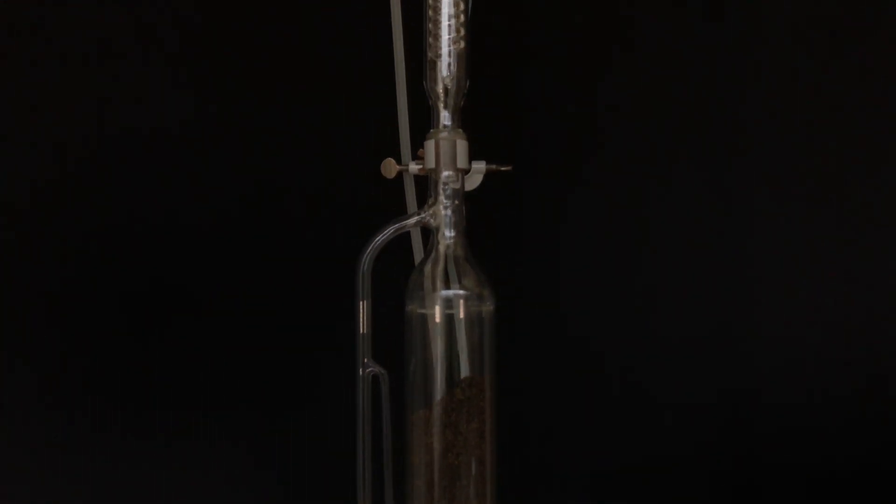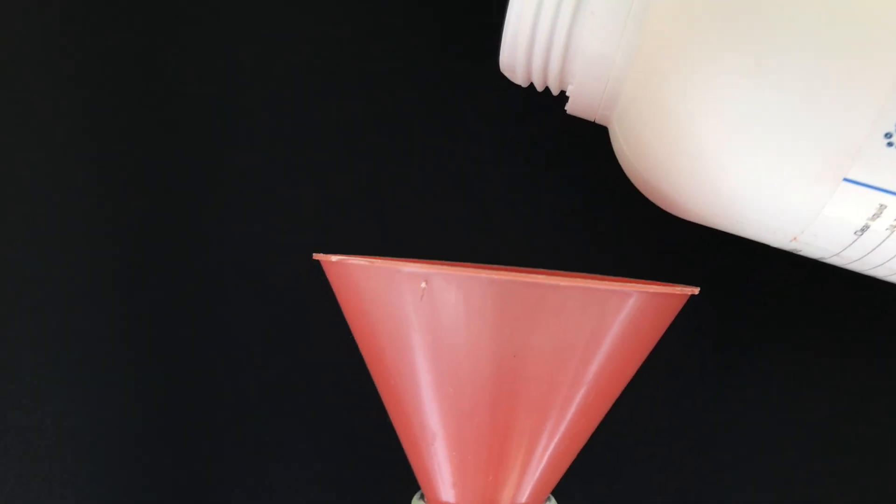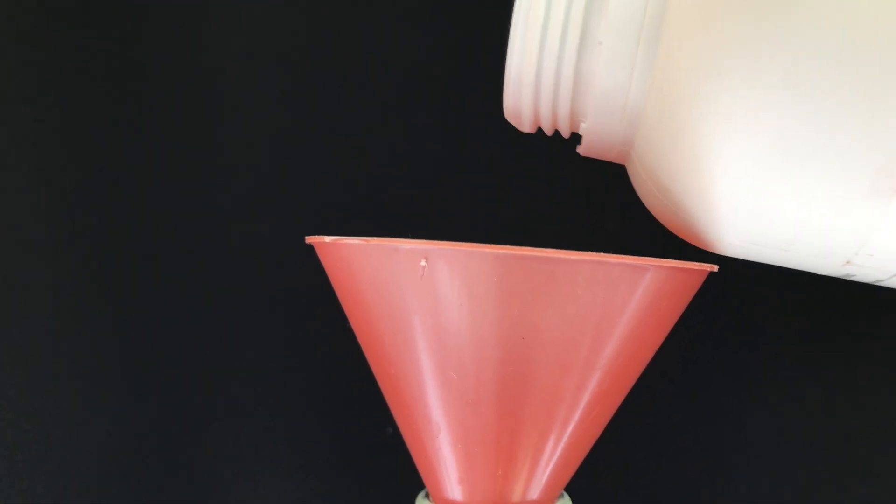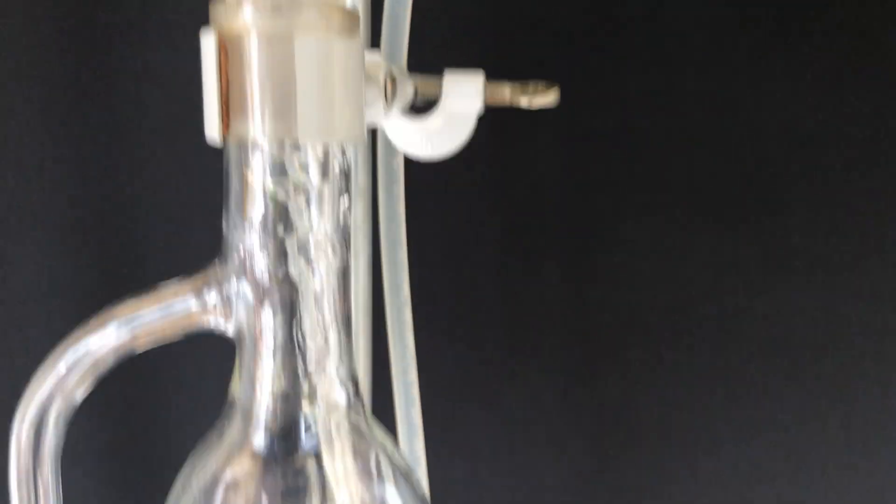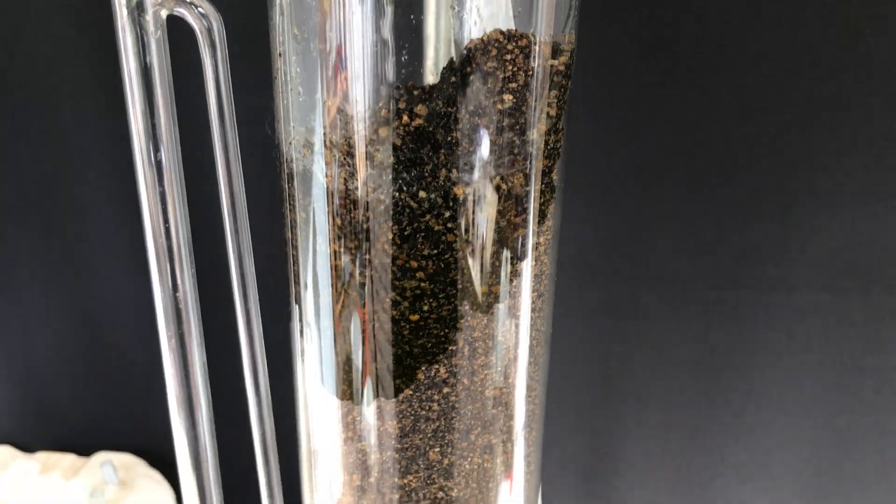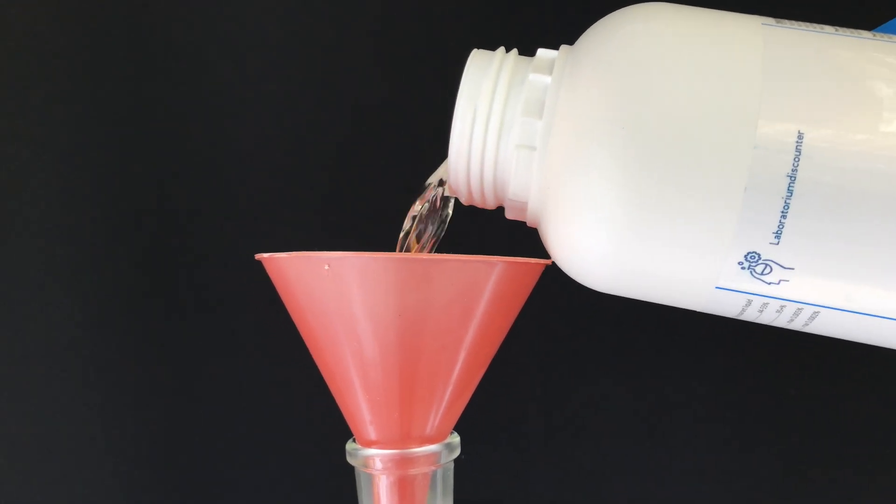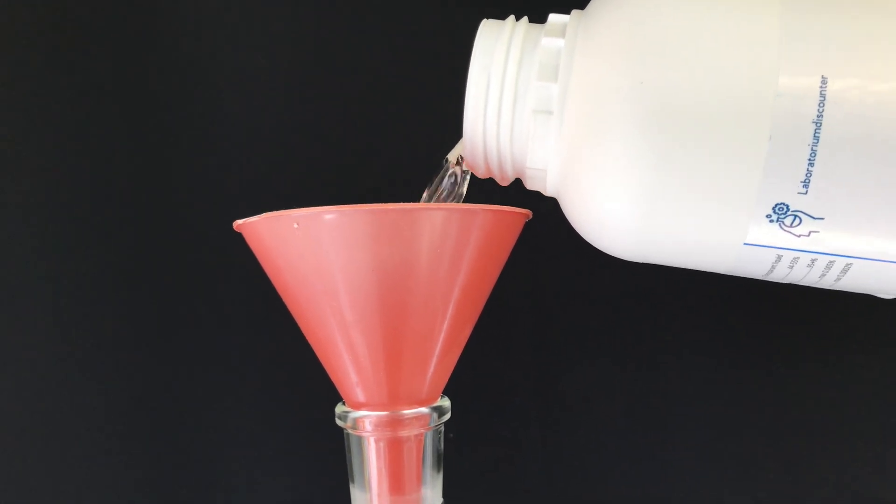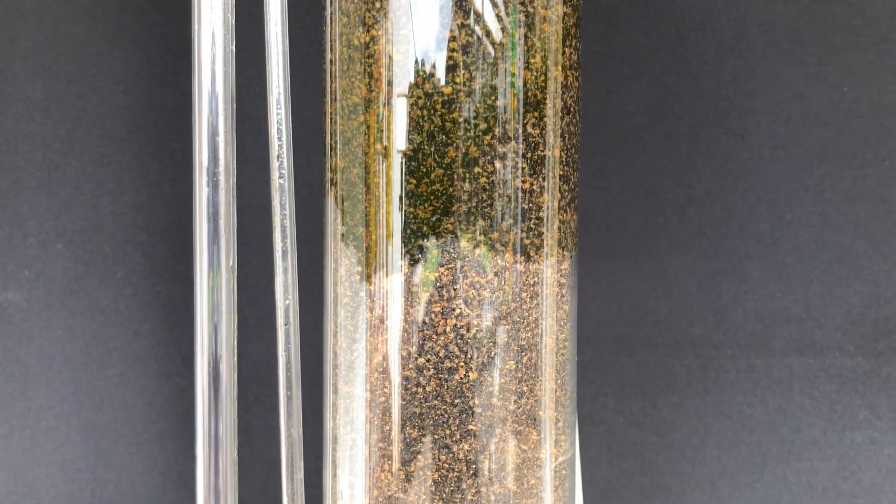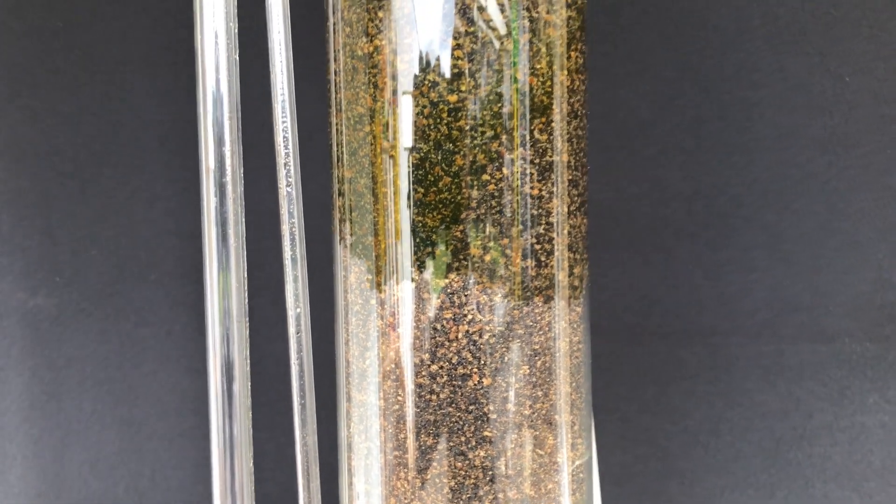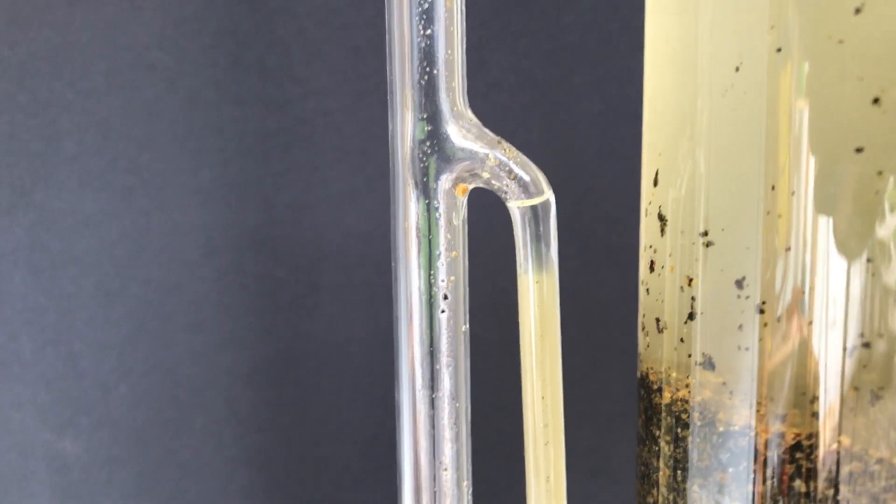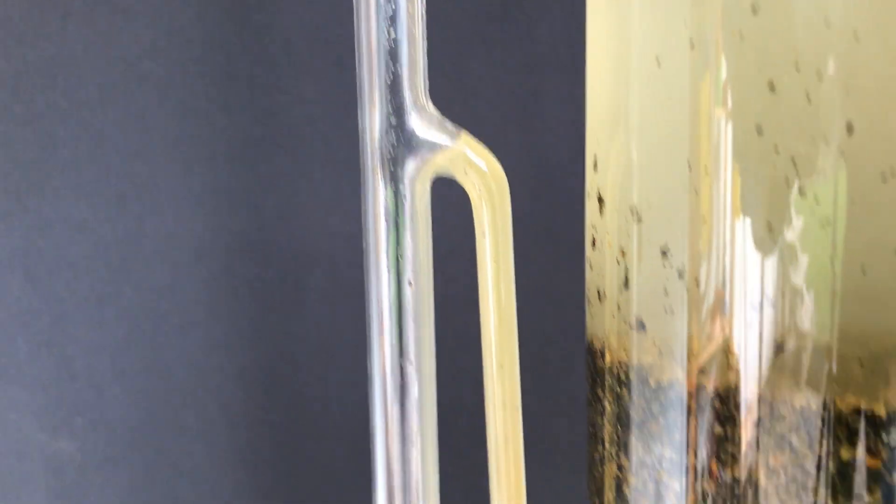As tropane alkaloids might be present in the form of a salt, you need to add ammonia to freebase them. Ammonia is not too caustic and will not hydrolyze the tropane alkaloids which are actually simple esters of tropic acid. If sodium hydroxide were used instead, the esters may be hydrolyzed to form tropanol, scopine, and tropic acid, which we also made synthetically in a previous video.